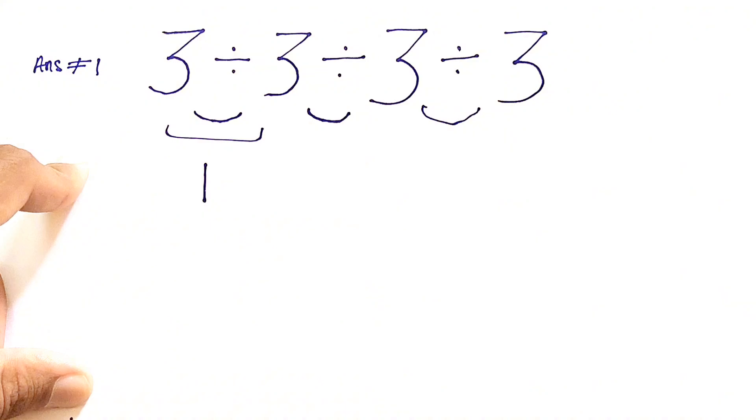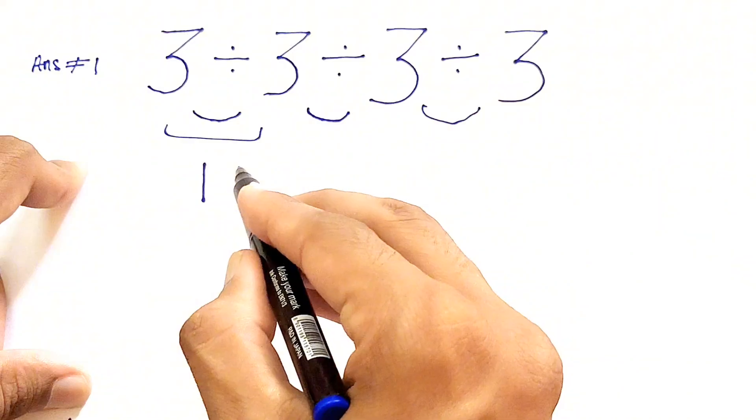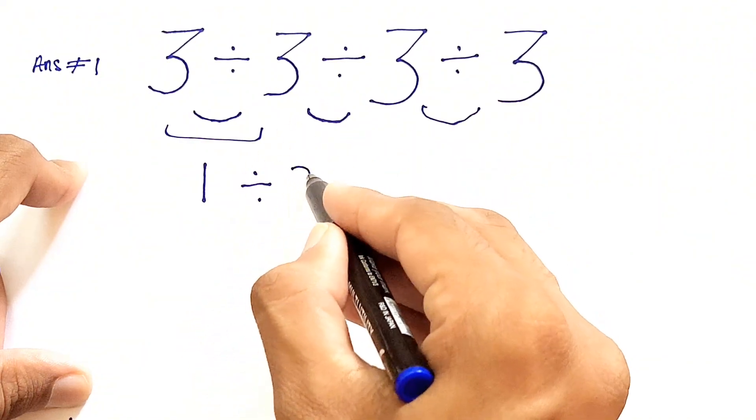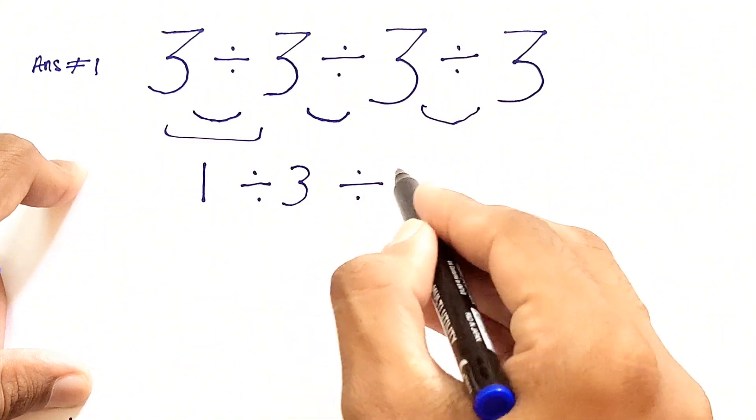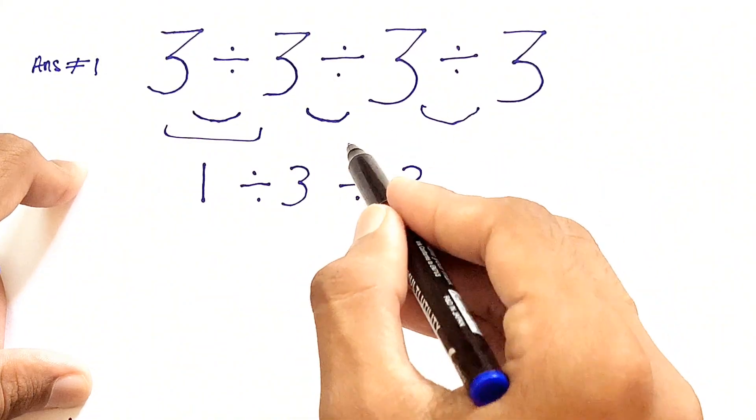So we'll write the 1 here and rewrite the remaining expression as it is, that is divided by 3, and then one more time we'll write divided by 3. So we get the simplified form of this expression.